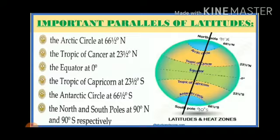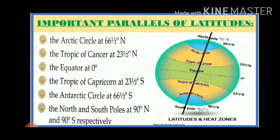Now coming to the southern part, we count from 0 degree equator towards 90 degree south. After the equator, the important parallel of latitude is the Tropic of Capricorn, at 23 and a half degree south. The next important parallel is the Antarctic Circle, at 66 and a half degree south. The terminal point is 90 degree south. So to summarize: Arctic Circle at 66.5° north, Tropic of Cancer at 23.5° north, Equator at 0°, Tropic of Capricorn at 23.5° south, Antarctic Circle at 66.5° south, and the poles at 90° north and south. This is very important — you have to prepare it carefully.